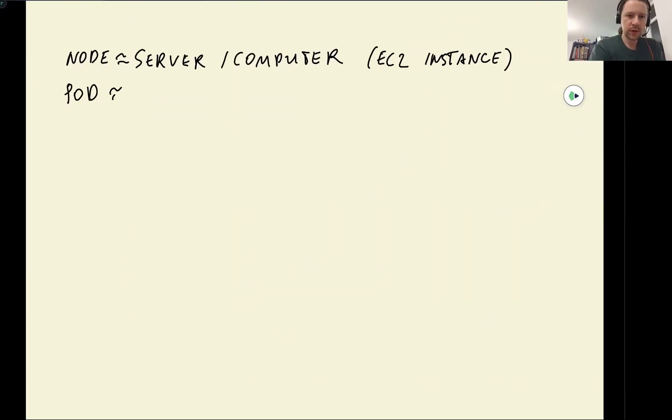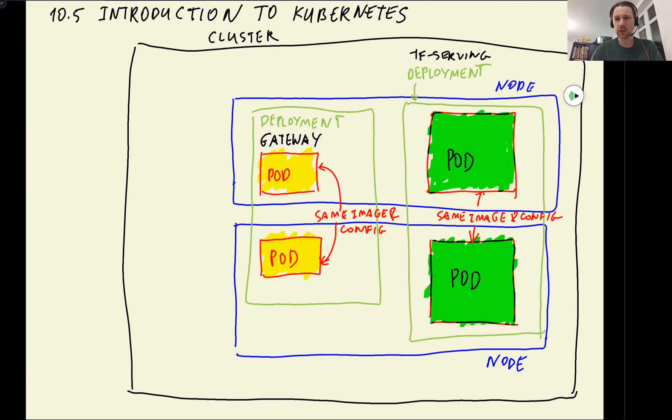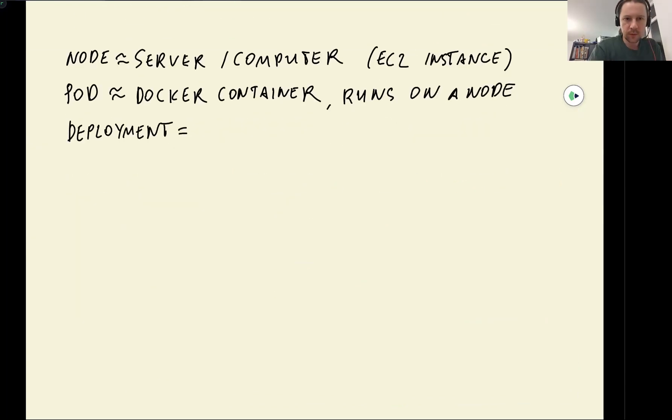Pod is approximately like a Docker container that runs on a node. And then we have deployments, which groups pods that have the same image, the same config. So they are basically the same, exactly the same images. So it's a group of pods with the same image in configuration.